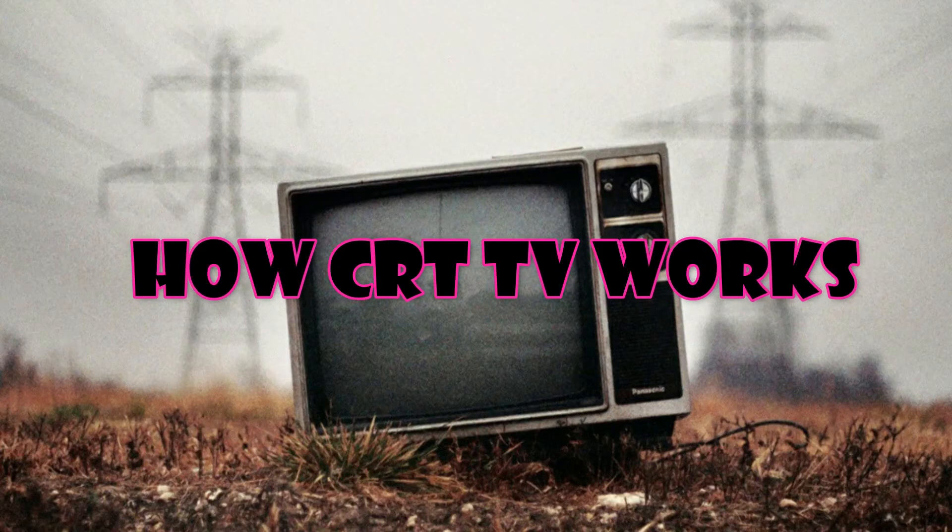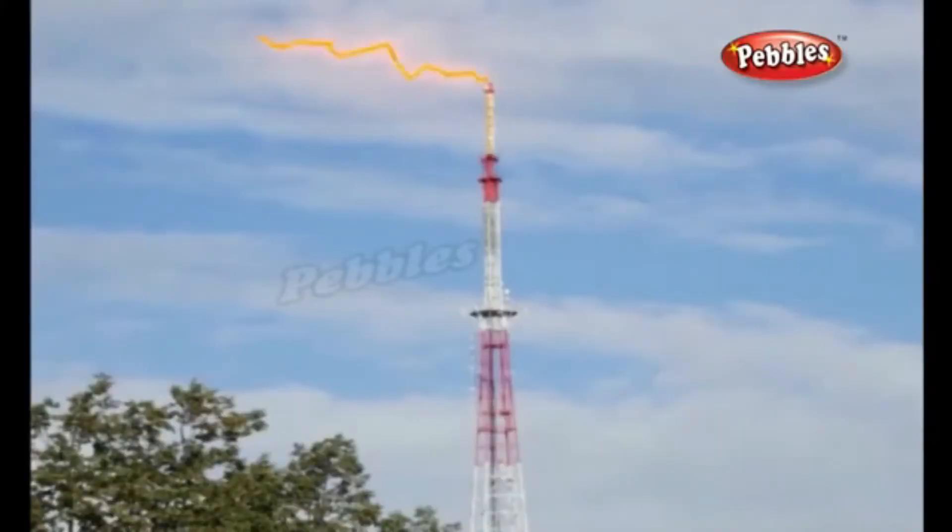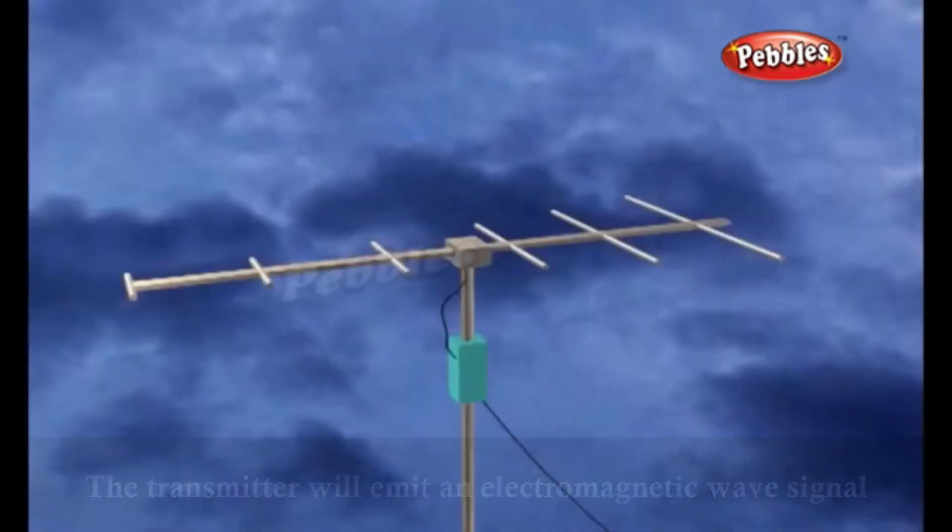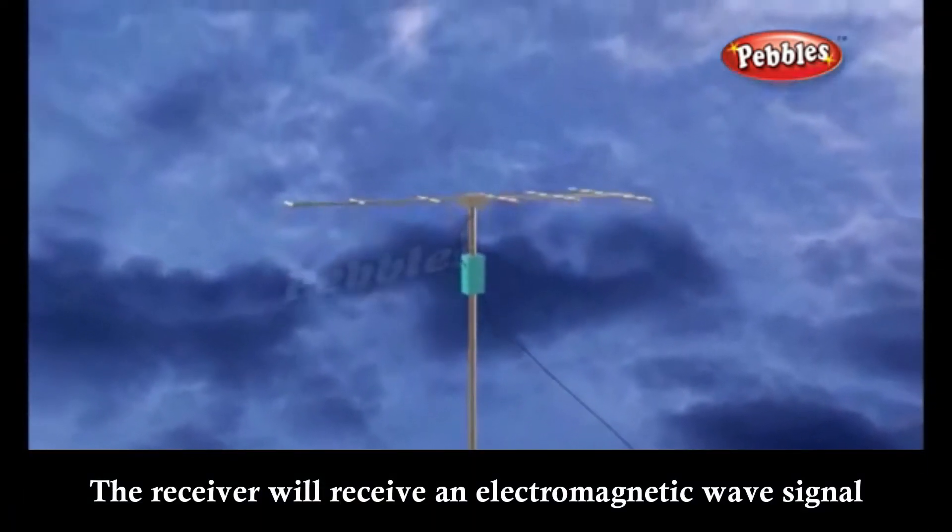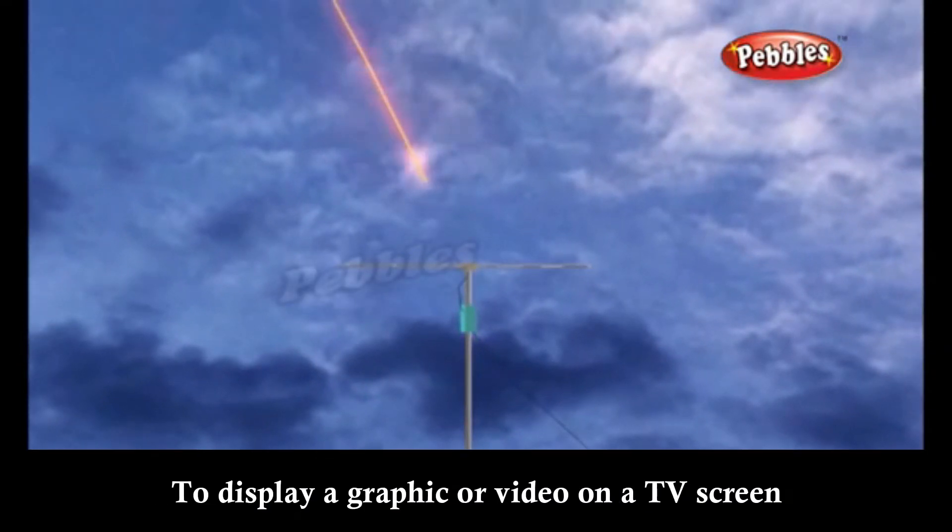Now we'll learn how CRT TV works. The transmitter emits an electromagnetic wave signal. The receiver receives this electromagnetic wave signal to display graphics or video on the TV screen.